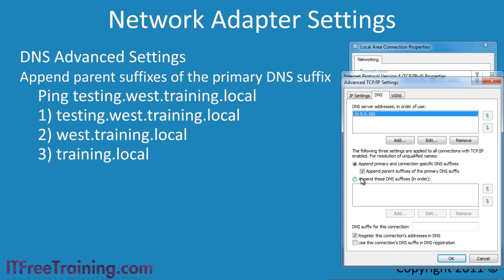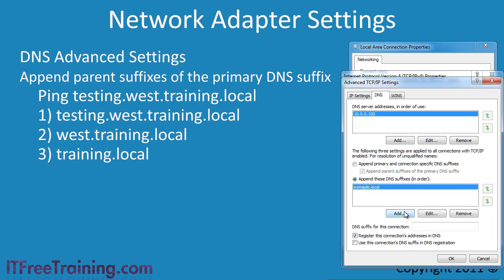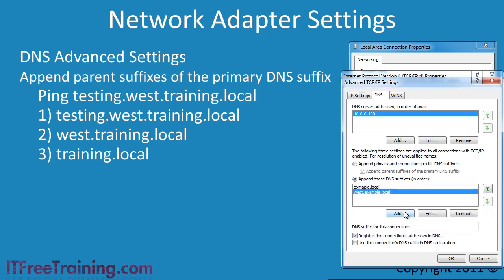The next option, apply these DNS suffixes in order, allows you to customize the domain suffixes used. For example, just say this computer was part of the domain example.local. Later on, a network called west.example.local was added. I could manually add both of these domain names and thus any resolve request would check both these domains for that computer.